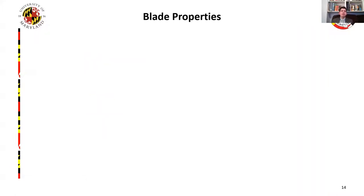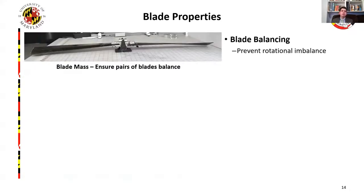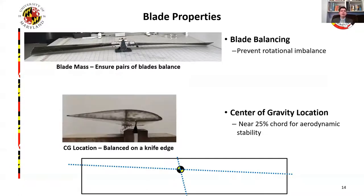Once the blade is finished, it is important to understand its physical properties in order to properly model and predict its behavior during the wind tunnel test. This includes both inertial and structural properties. To ensure no imbalance in the rotor, it is critical that all blades balance evenly. This can be adjusted by placing aluminum tape at the tip of the blade, which adds a small amount of weight but greatly improves the center of gravity of the blade pair, preventing any once-per-revolution forcing due to imbalance. Once this is done, you can check the location of the center of gravity of each blade — it must be placed near the aerodynamic center at 25% chord for aerodynamic stability. This is designed in using the leading edge weights but double-checked by balancing the blade on a knife edge along two separate axes. The intersection of these axes is the center of gravity.